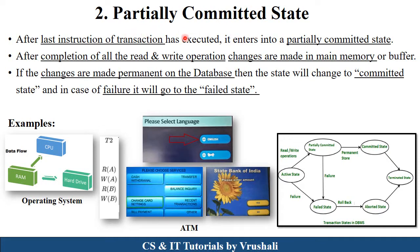The second state is the Partially Committed State. In this state, all the operations such as read and write have been performed and stored into main memory (RAM/buffer), not yet written to the hard drive. For example, a CPU performs operations like Read A, Write A, Read B, Write B and all these are stored in RAM. In the ATM example, after inserting the card, when the system asks you to select language, choose a service (withdraw/transfer), or enter an amount — that is the partially committed state.